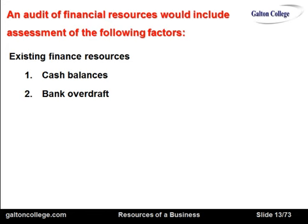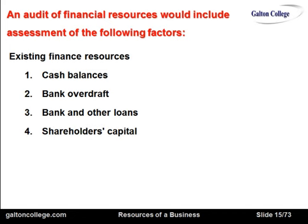It could be a bank overdraft, though overdrafts are generally expensive. A business continually relying on overdrafts is a warning sign — the overdraft should be a very short-term fix, not long-term finance. Long-term borrowing from the bank carries a lower interest rate and is more manageable. Funding could also come from other investors, institutions, or shareholders who own the business and may be willing to invest further.